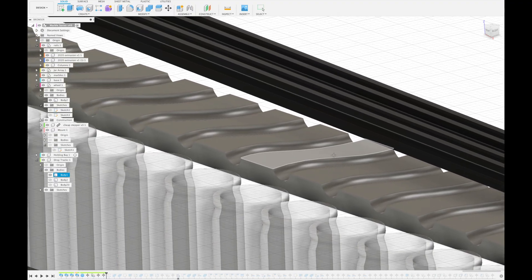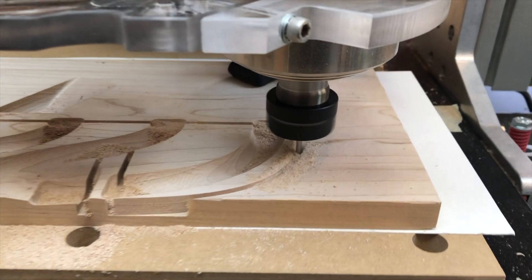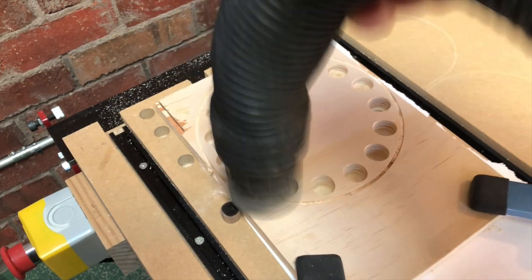Next is this track that directs the marbles into the jars. It's also machined out of wood. This toolpath is also cutting out the rest of the support structure parts. And the wheel is a neat system.